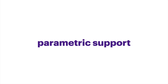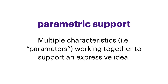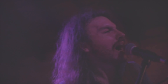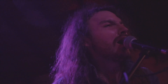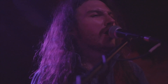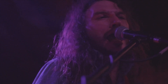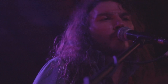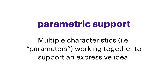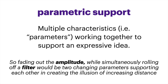The main idea here is parametric support. Parametric support is when multiple characteristics of a sound — the parameters — work together to support an expressive idea. For example, often in a song when a singer goes to a high note, they also crescendo. So you have multiple parameters — how high the pitch is and how loud it is — working together for this single expressive idea. In our distance example, we're using the reverberation, the amplitude, and the low-pass filtering together to create this expressive idea of increasing distance.